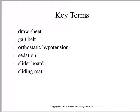Some key terms: we'll talk about what a draw sheet is, the gait belt, orthostatic hypotension — which basically means if you sit up too fast you pass out — sedation, slider boards, and sliding mats.